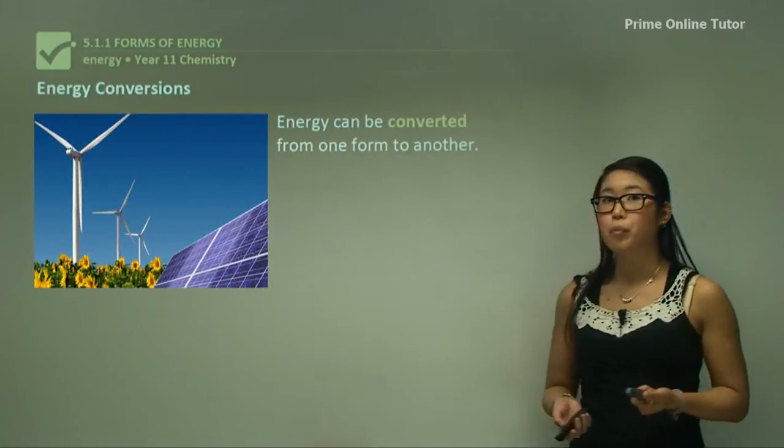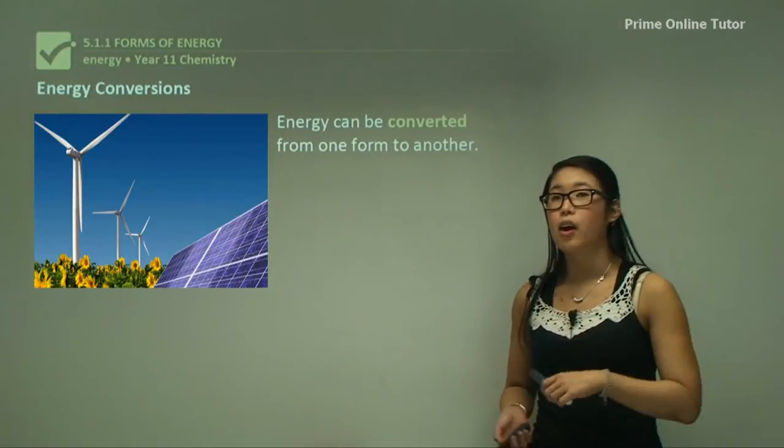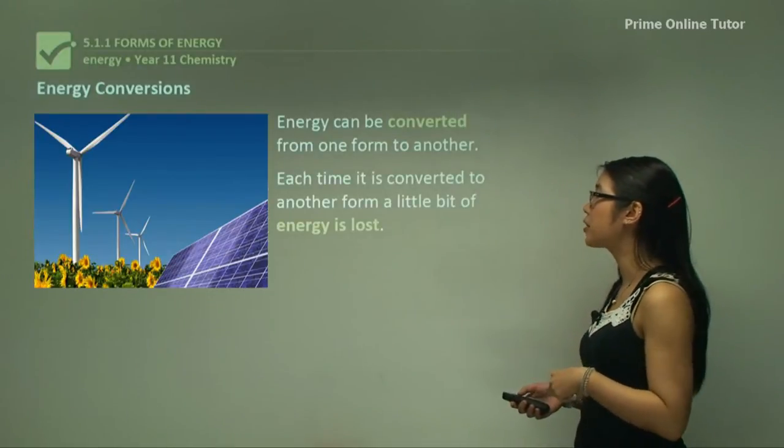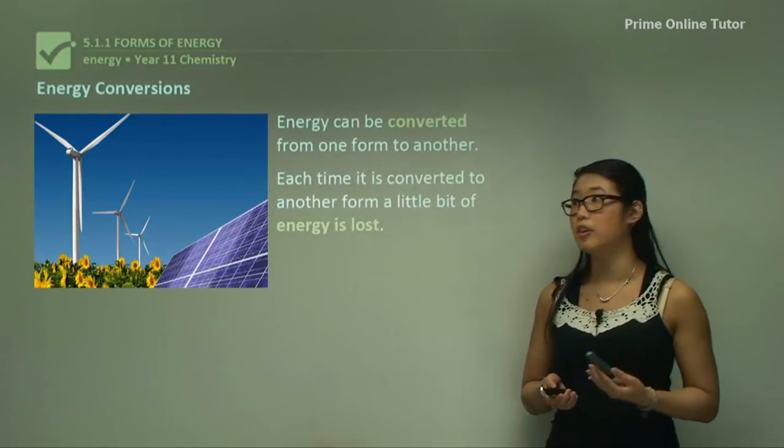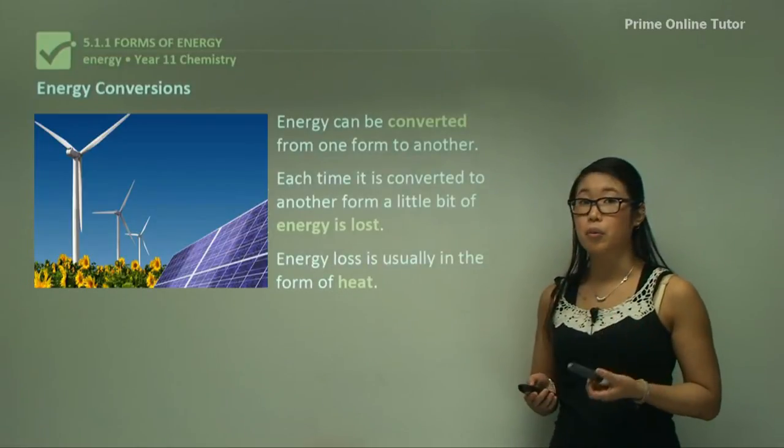So energy can be converted from one form to another so from heat to mechanical or kinetic or from chemical potential to heat. Each time it's converted a little bit of energy is lost and energy loss is usually in the form of heat.